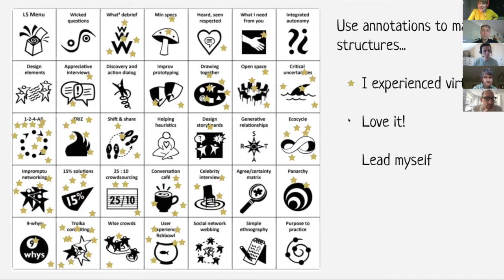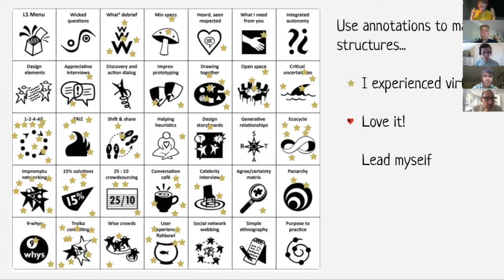The next thing to mark is a structure you really loved — but loved virtually, so not your preferred structure overall — just take a glance: that was a structure I really loved virtually.